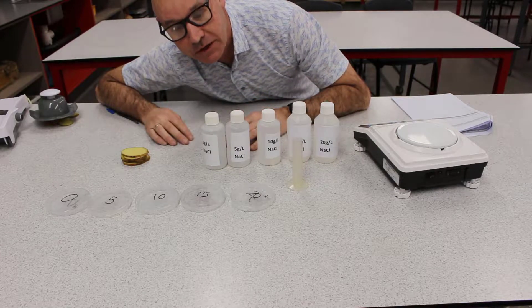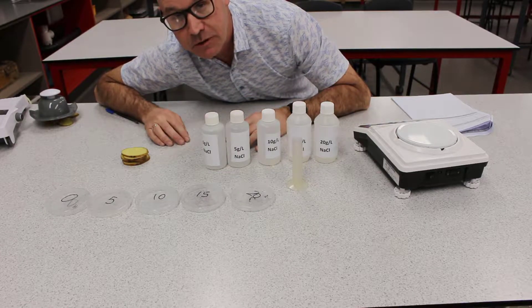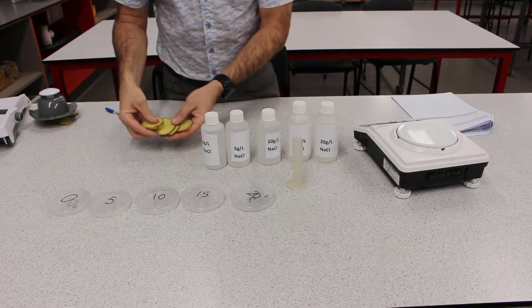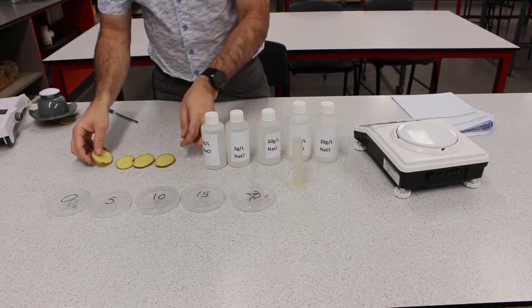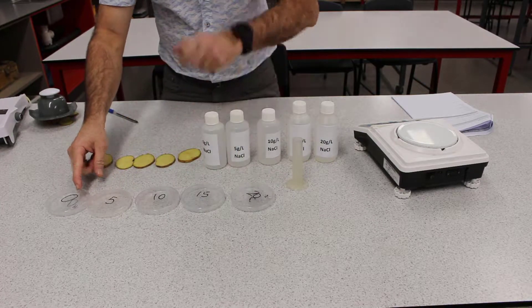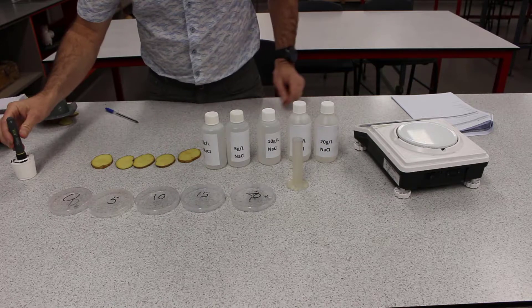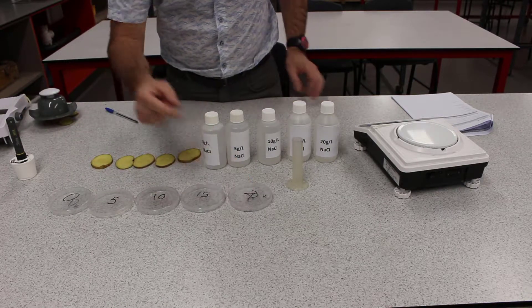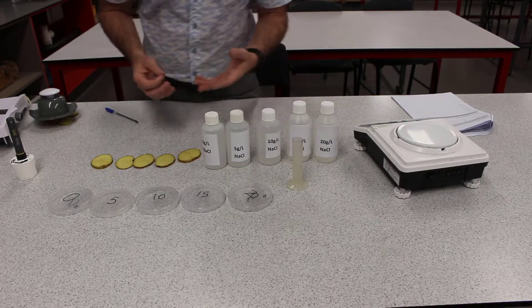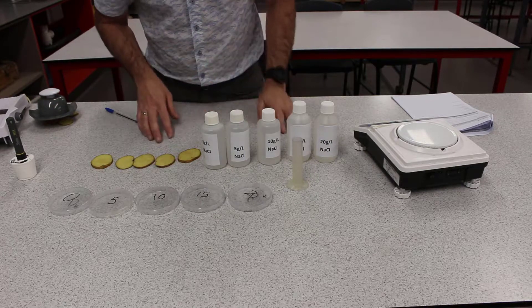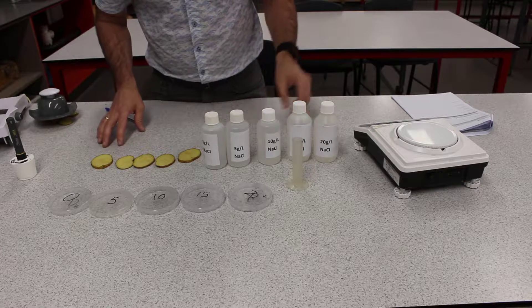Okay guys, I'm just going to show you the experiment, how to set up the potato experiment. Alright, so we're going to have five pieces of potato and we're going to have five petri dishes. I've used a sharpie to label each of them, so 0, 5, 10, 15, 20, because that's the grams of salt, sodium chloride, in each of them per litre.